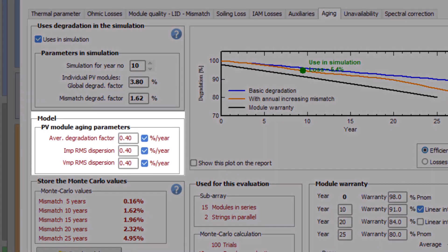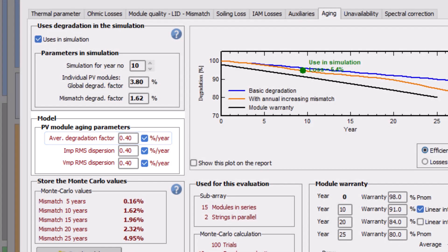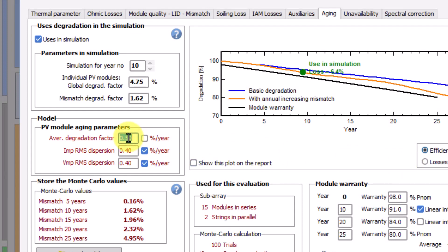In the Model section, you can define the PV module aging parameter per year. The first value is the average degradation factor of the PV module. This parameter is the annual average factor of the aging rate of the module. Typically, a consistent degradation rate for silicon technology is around 0.3 to 0.5% per year. In this example, we shall fix the value at 0.5% per year.